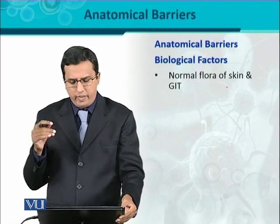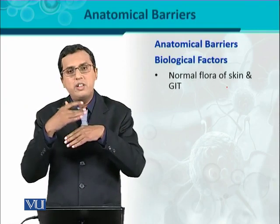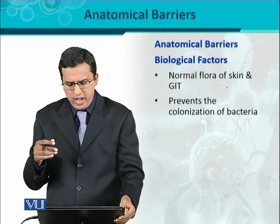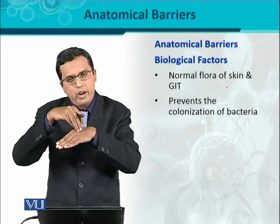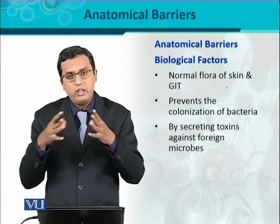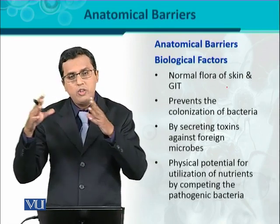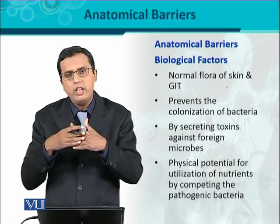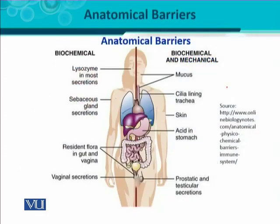Within the anatomical barrier, the third important category is biological factors. In a natural tract system, normal flora is present which can prevent colonization — when an infectious agent tries to invade skin, normal flora resists its colonization. These normal flora also create toxins which are toxic against foreign microorganisms. Additionally, normal flora competes for available nutrients — they consume the available nutrients so that infectious agents find no nutrients to survive, flourish, or grow.